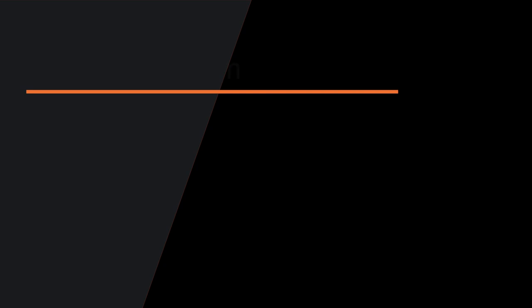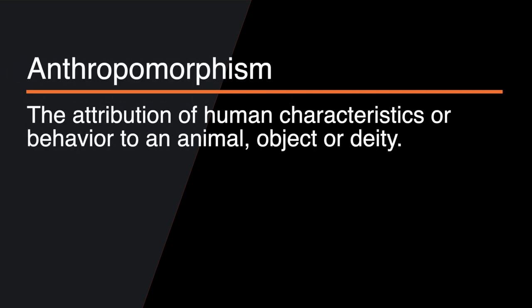So what is anthropomorphism? Anthropomorphism, by definition, is the attribution of human characteristics or behaviors to an animal, an object, or a deity. Believe it or not, many TV shows, movies, advertising commercials, and branding companies use anthropomorphism all the time.